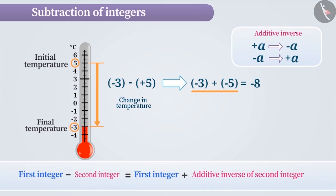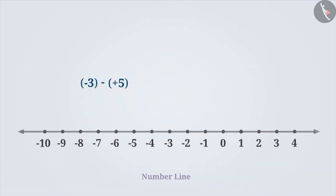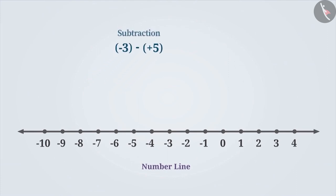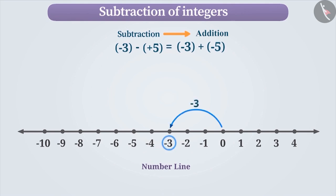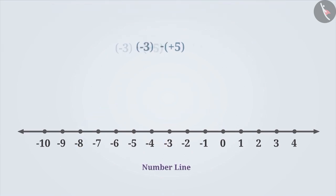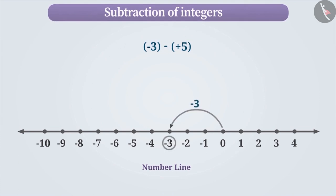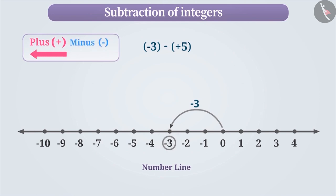In order to find the subtraction of integers on a number line, first convert subtraction into addition and then add the numbers to obtain the result. We can also do the subtraction on a number line without conversion. To do this, we find the location of the first integer. While subtracting two integers on a number line, if the sign of the second integer is positive, then we will move towards the left side of the first integer. And if the sign is negative, then we move towards the right side of the first integer. To subtract, mark minus 3 on the number line, which is three steps towards the left of 0. Now, since we need to subtract the positive integer plus 5, we move five steps towards the left side of minus 3, thus reaching minus 8.